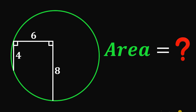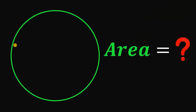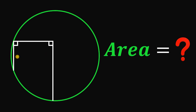Find the area of the green circle. Given this green circle, let's draw a chord, and from this point let's draw a perpendicular segment. From this segment let's draw another perpendicular segment. This chord measures four units, this segment measures six units, and this segment measures eight units. The question is: what is the area of the circle?